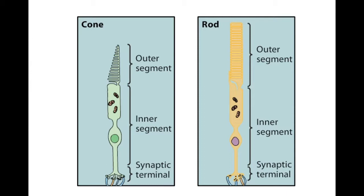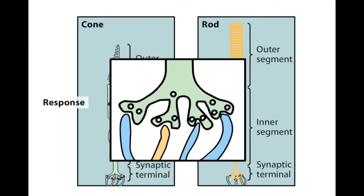Phototransduction is the process of a cell absorbing light and creating a response. The response is a change in the amount of transmitter that is being released onto target neurons.